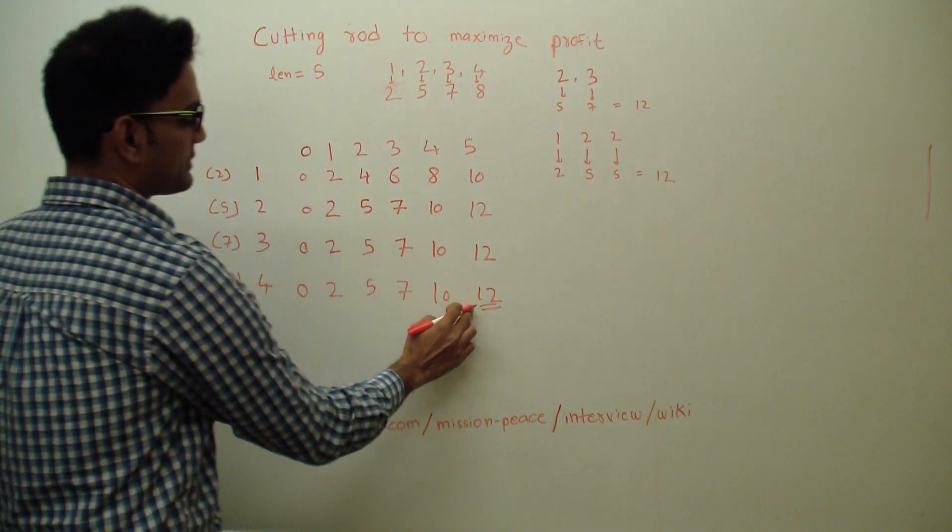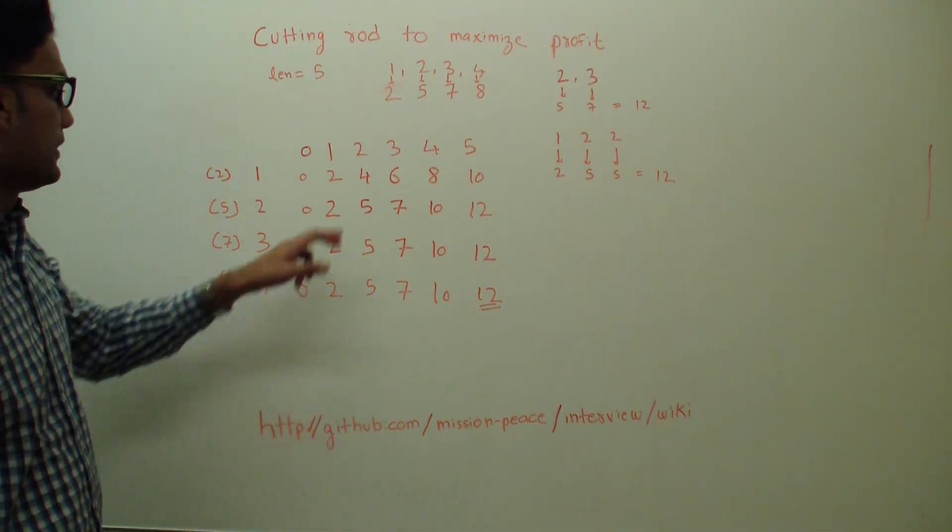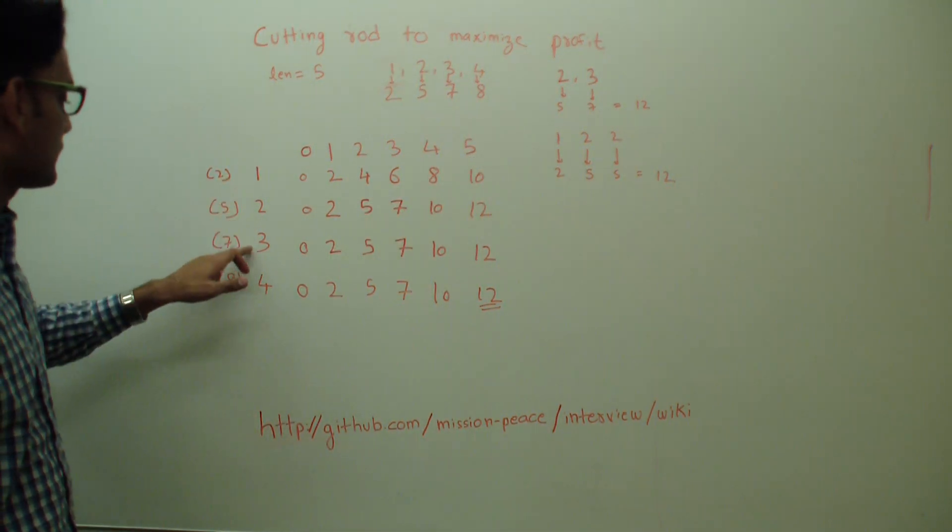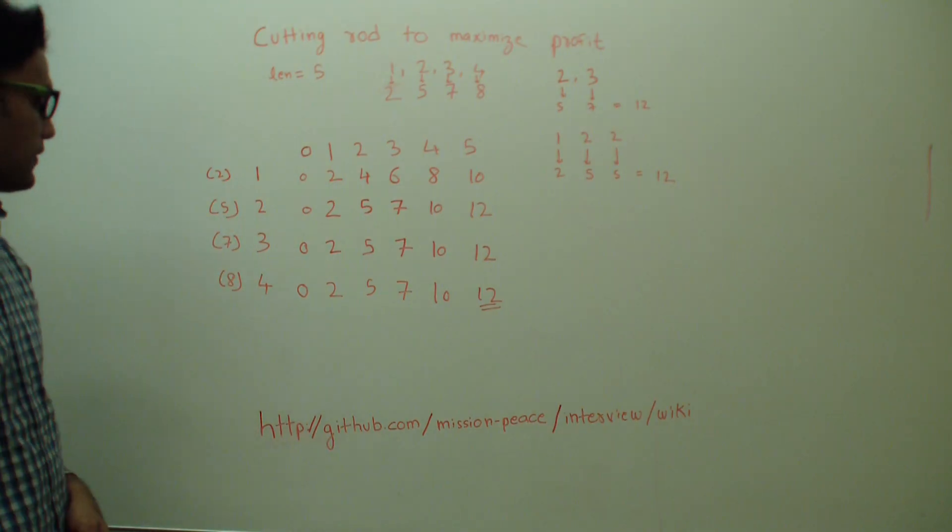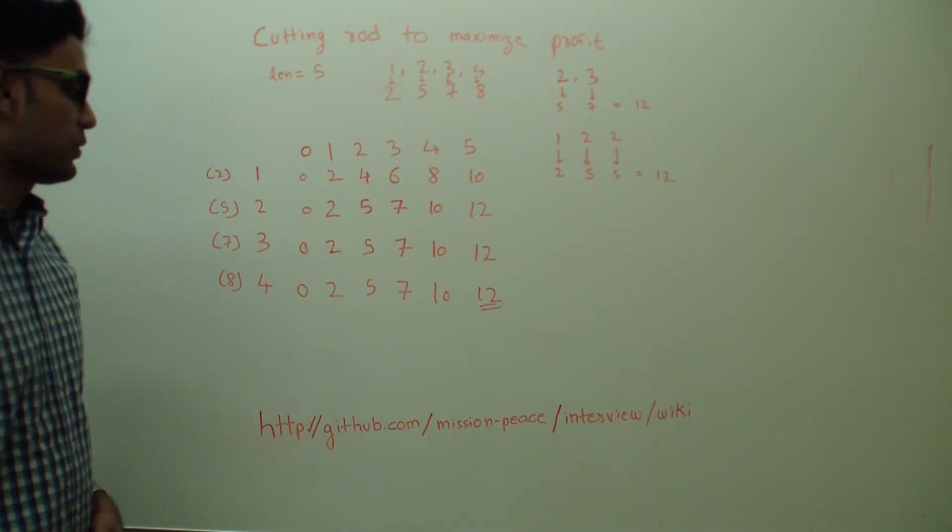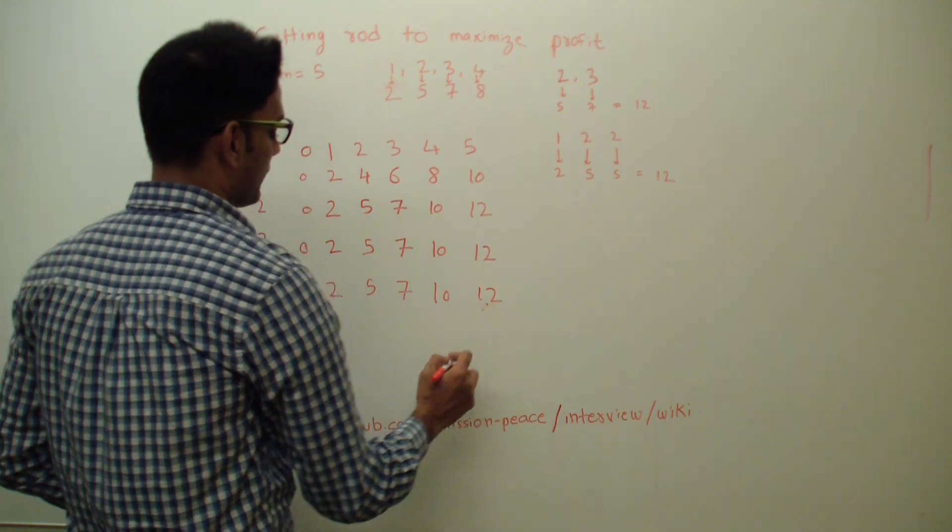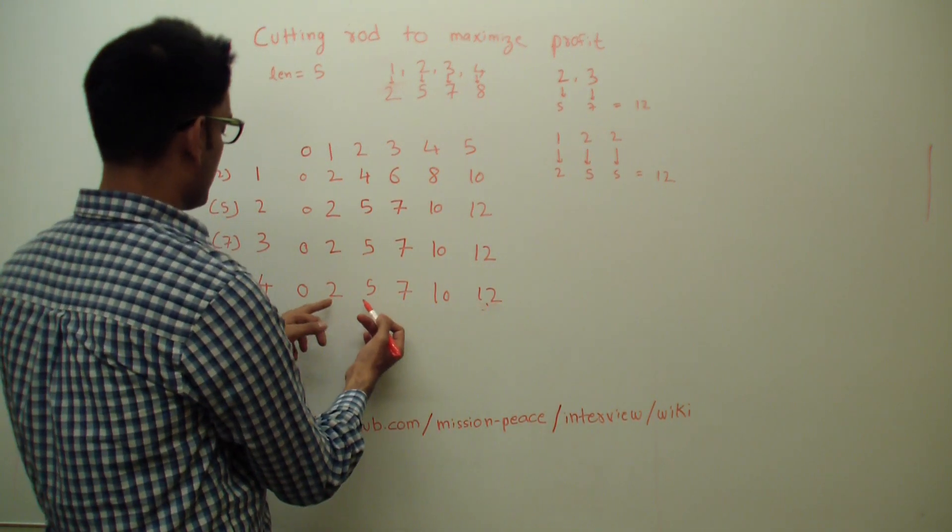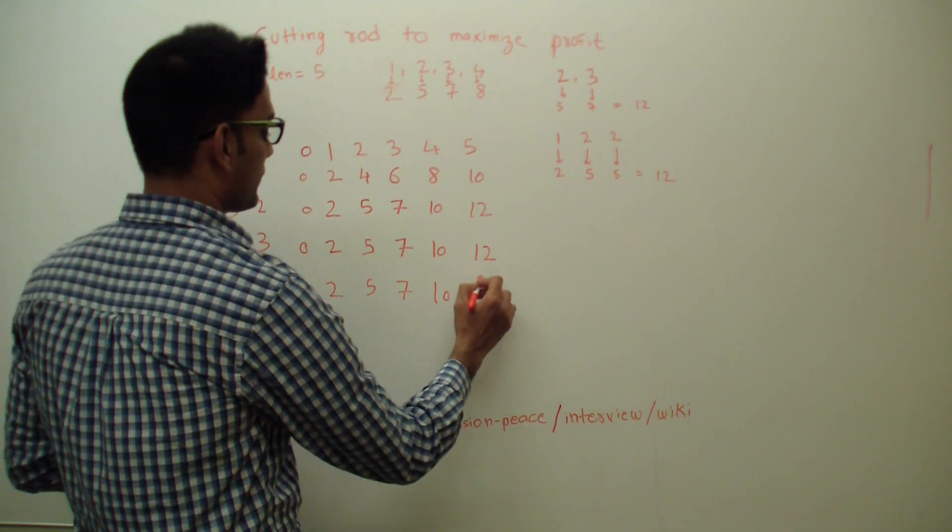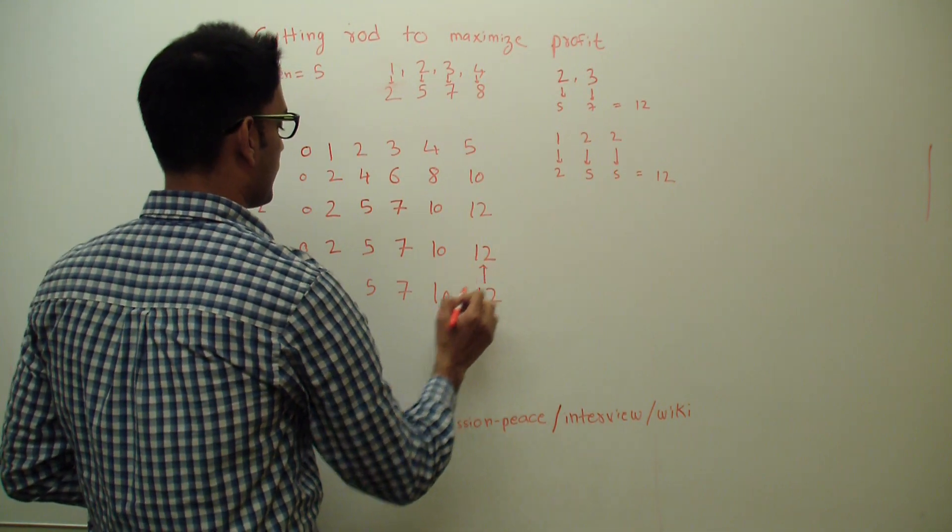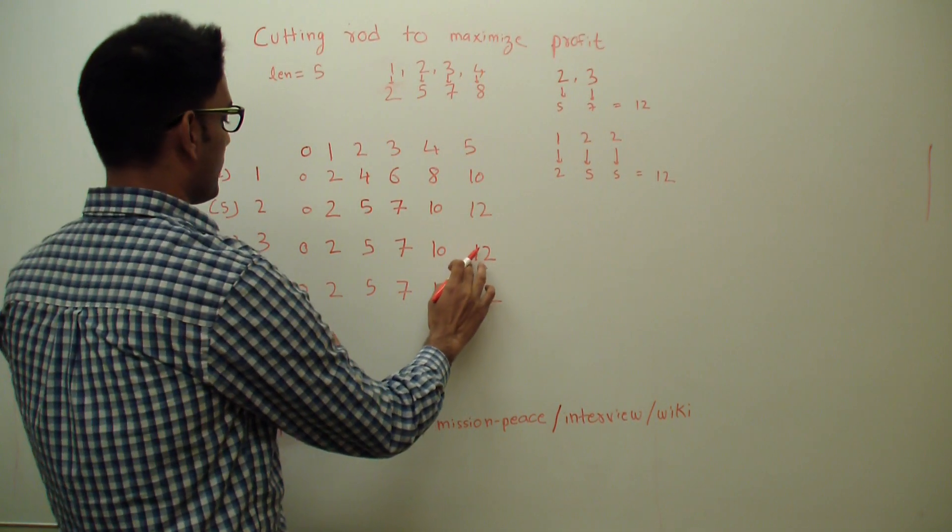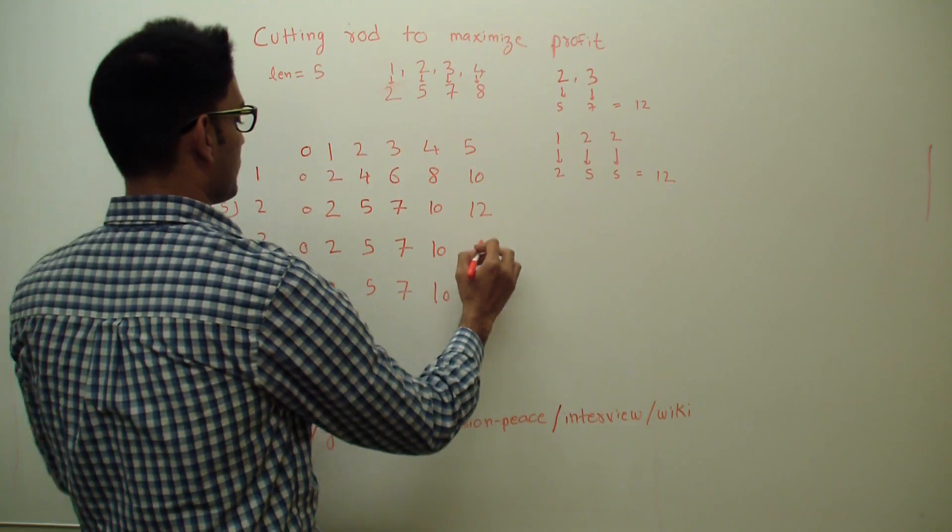So this is the maximum profit you can make if you have selling a rod of length five and these are the cuts you are giving to the rods. So how do we get the actual answer? Let's start from here. Where is this twelve coming from? It's not coming from here, so it's coming from here, so we go up. Where is this twelve coming from? It's coming from here, so we go up.